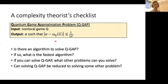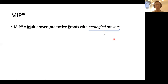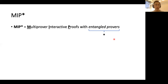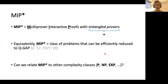This brings us to the complexity class MIP*, which stands for Multi-prover Interactive Proofs with entangled provers. The star indicates the provers share quantum entanglement, while the verifier remains a classical machine and all communication is classical. An equivalent characterization: MIP* is the class of problems that can be efficiently reduced to Q-gap — approximating the quantum value of nonlocal games.